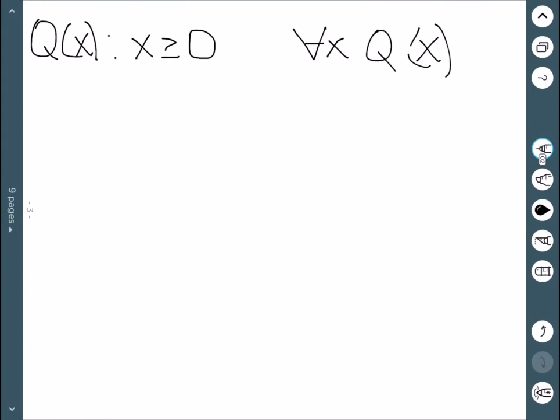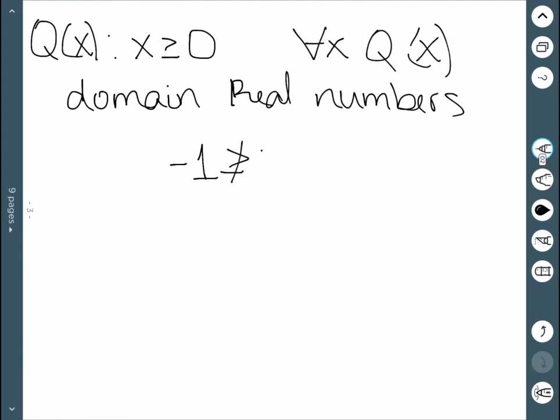In this case, let our domain be the real numbers. We know that not all real numbers are greater than 0—for instance, -1 is not greater than 0. To prove a universal quantified statement is false, we just need to find a single counterexample.